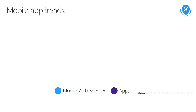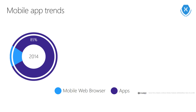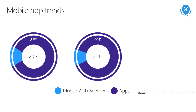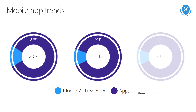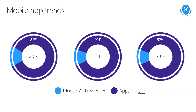So we know users are using devices and we know they want their data, but how are they consuming that data? Well, it turns out that users prefer applications. In 2014 we saw that users spent about 85% of their time on their devices using applications and only 15% using mobile browsers, and that trend is only increasing. In 2015 we see 90%, and in 2016 we saw up to 92% — users love apps.